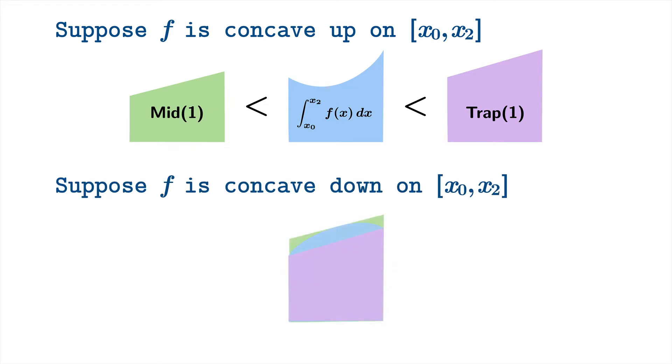Now if the function f is concave down on that same interval, then the roles of the trapezoid and midpoint sums are going to be reversed. The trapezoid sum is going to be too small and the midpoint sum is going to be too large.